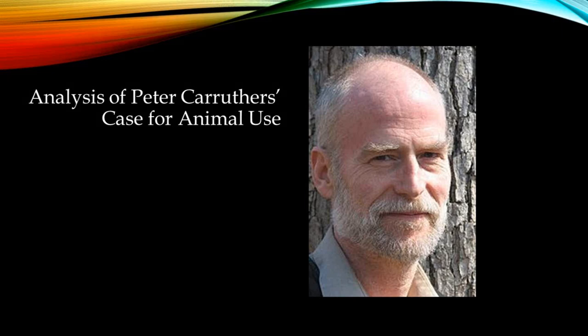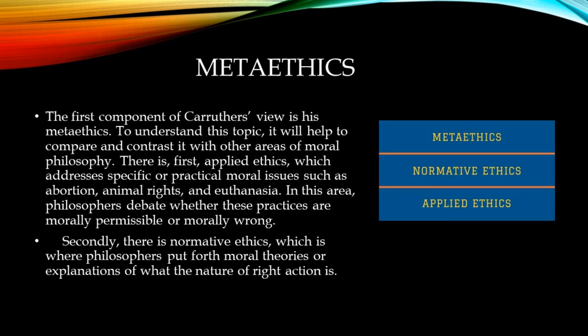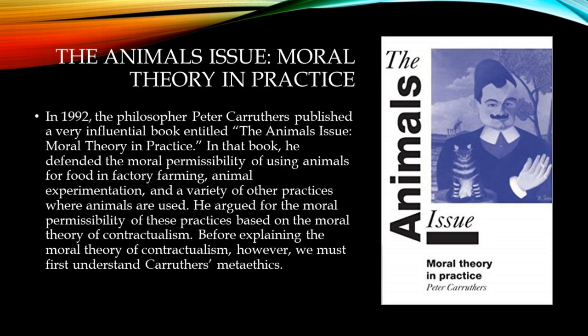Hello, everybody. Today we're going to be discussing Peter Carruthers' defense of the moral permissibility of animal use. In 1992, the philosopher Peter Carruthers published a very influential book entitled The Animals Issue, Moral Theory and Practice. In that book, he defended the moral permissibility of using animals for food and factory farming, animal experimentation, and a variety of other practices where animals are used. He argued for the moral permissibility of these practices based on the moral theory of contractualism.